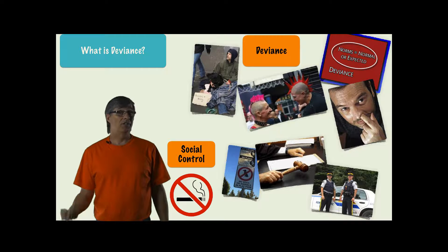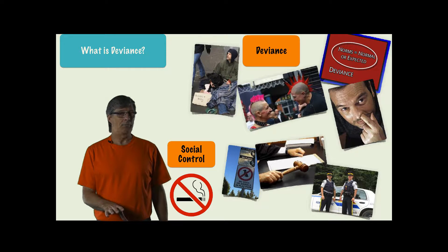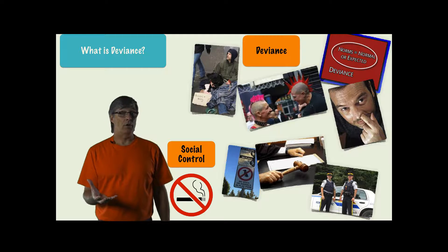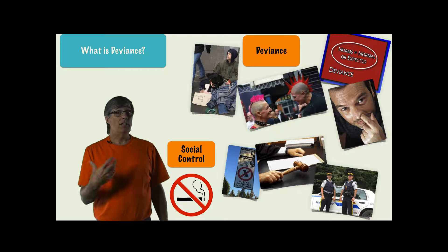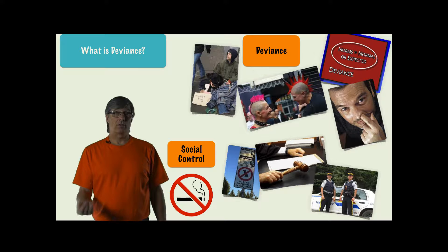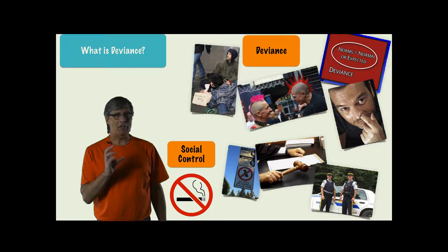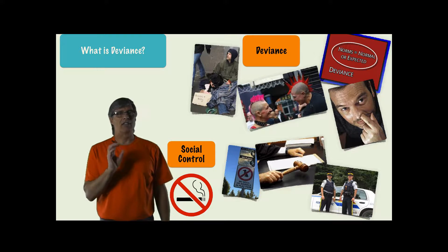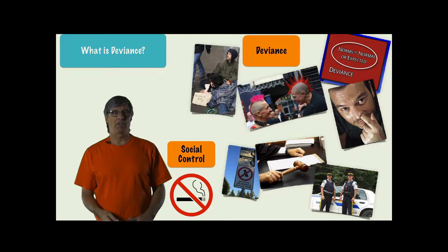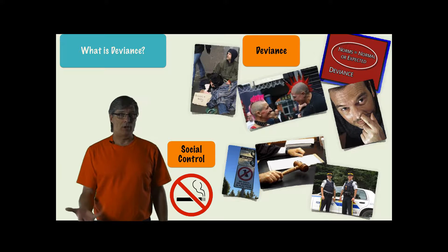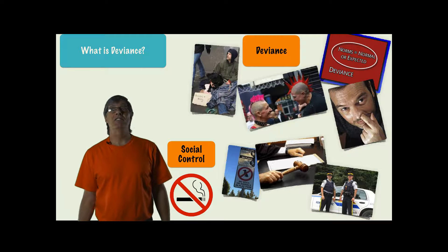Social control is systematic practices developed by social groups to encourage conformity. Control can involve socialization, or it could involve using negative sanctions — the most extreme negative sanction being prison. Deviance is relative; an act becomes deviant when it is socially defined as such. For example, you could argue that wearing shorts in the wintertime is deviant.